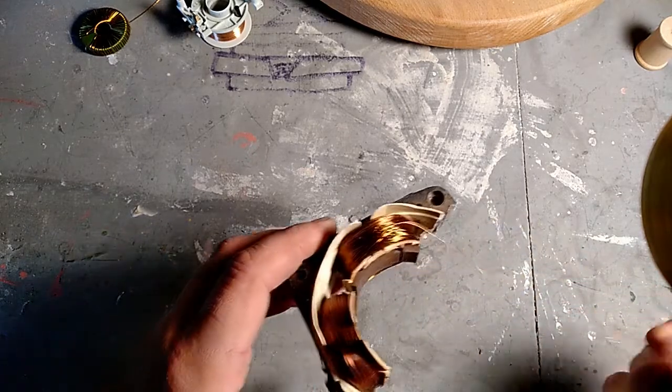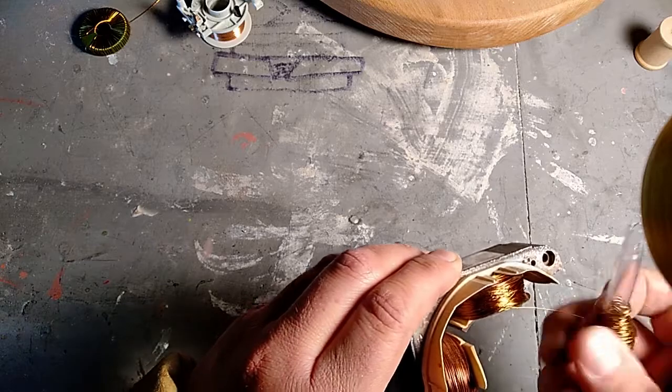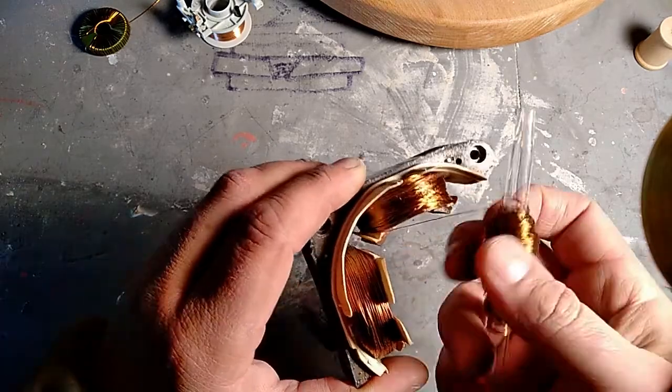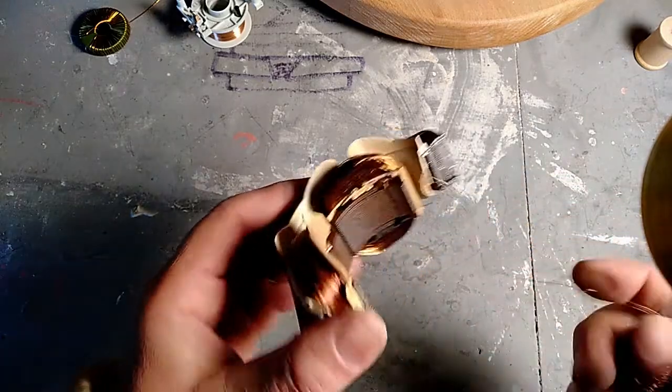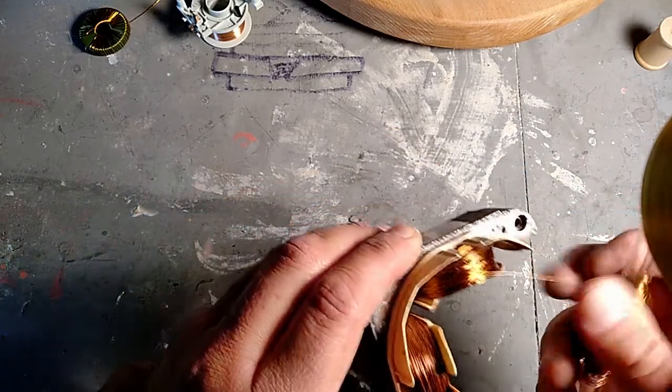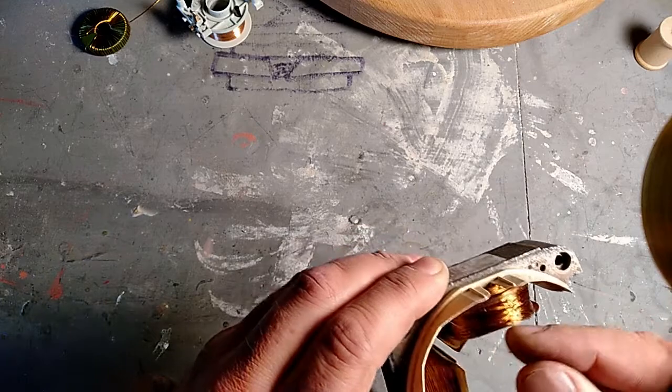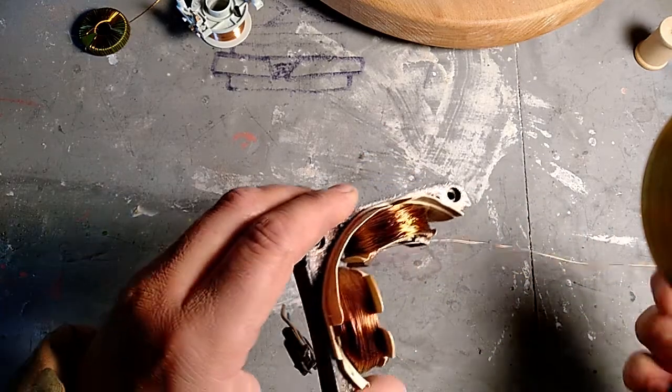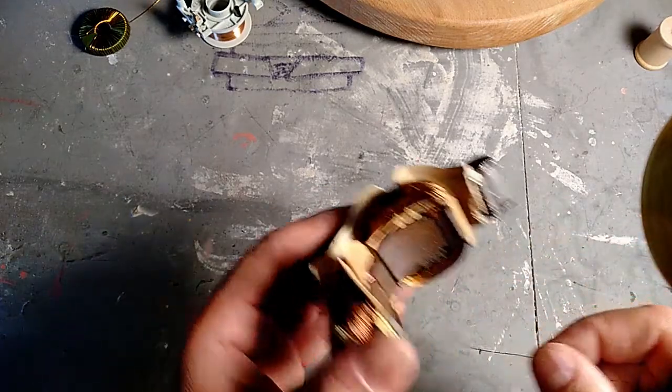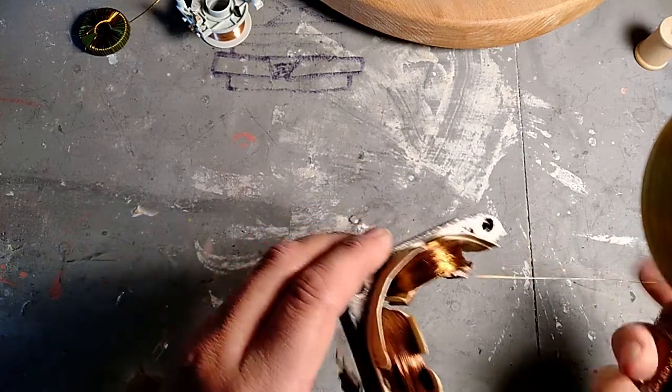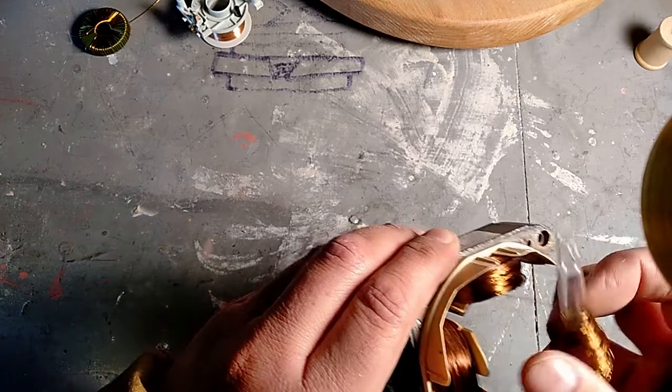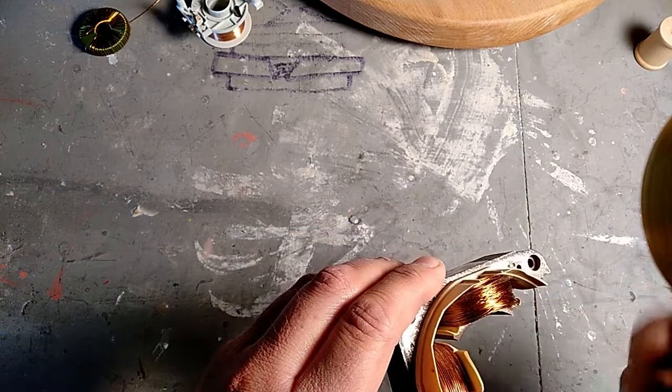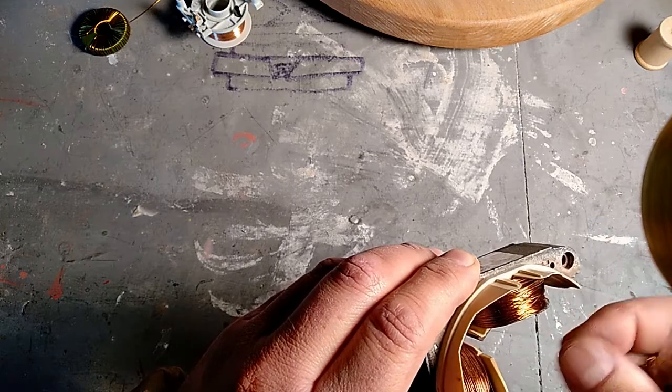Mentre vado avanti con questo lavoretto che come vedete va fatto con molta delicatezza, perché quando si va a svolgere c'è il rischio di rovinare la vernice, lo smalto del filo, cosa che non deve succedere perché se no il filo poi è inutilizzabile. Vi lascio e ci vediamo al prossimo video. Vi ringrazio, se volete mettete un like, se volete iscrivetevi al canale, ciò mi farà molto piacere.